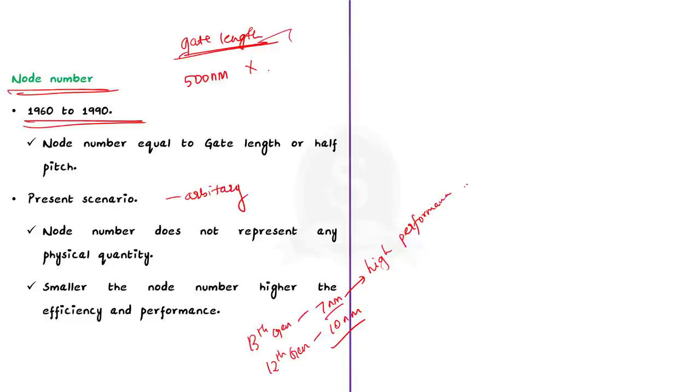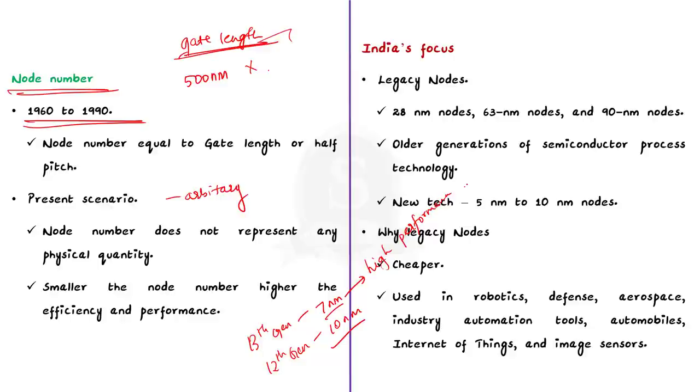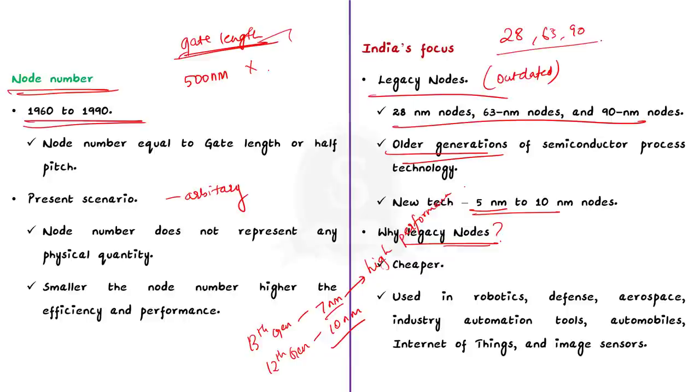As we all know, the government has been taking various measures to give a push to semiconductor manufacturers in India. Now, what exactly is India trying to manufacture? India's current focus is on the manufacture of 28 NM nodes, 63 NM nodes and 90 NM nodes. These are called legacy nodes. Here, legacy nodes refers to older or previous generations of semiconductor process technology. These legacy nodes are considered outdated. This is because currently, the latest computers and mobile devices use chips in the 10NM to 5NM node range. Now, you may have a question. Why is India focusing on making outdated chips that is 28 NM node or higher rather than focusing on 10NM or 5NM chips?